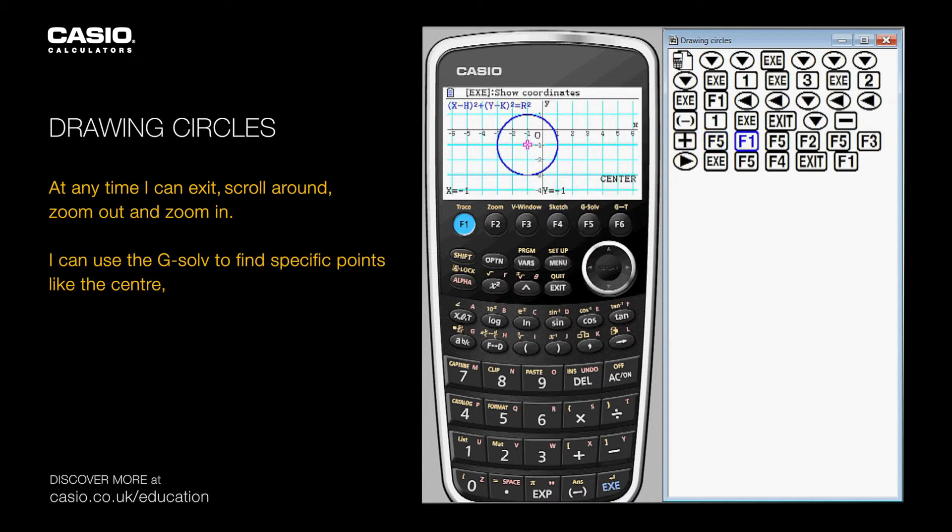I can use the G solve to find specific points like the center, the radius, x-intercepts which I can paste on, and y-intercepts.